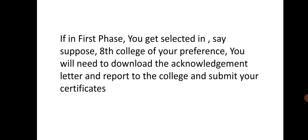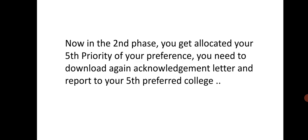If in the first phase you get selected in, say, the 8th college of your preference list, you will need to download an acknowledgement letter and report to that college and submit your certificates. In the second phase, if you get allocated your 5th priority college, you need to download an acknowledgement letter again and report to that fifth preferred college.